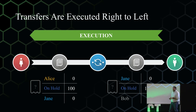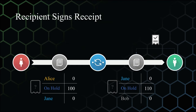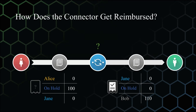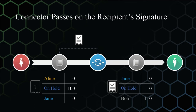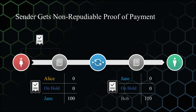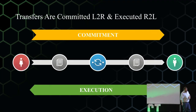By signing the receipt, the recipient sends it back to the connector. Once the signature is received, the ledger releases the held funds to the recipient. The receipt is passed back to the connector, who sees the signed receipt, confirms it was a successful transaction, and sends it back to the sender's ledger. The sender then releases the funds on hold to reimburse the connector, and gets a proof of payment through that signed receipt. So transfers are committed left to right and executed right to left.